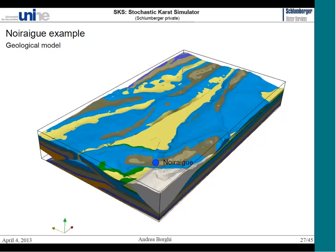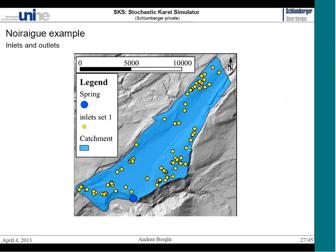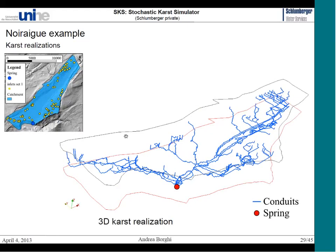The geology has been modeled in 3D, showing complex folds and thrusts. In blue you can see the main karst aquifer of the Noireg spring, part of which lies under a tertiary cover — making it geologically quite complex. We mapped all the inlets using field measurements and a precise digital elevation model to identify all infiltration points in the catchment. These serve as starting points for the karst simulation. Using all these inlets and the geological information, you can obtain several realizations similar to what is shown here.